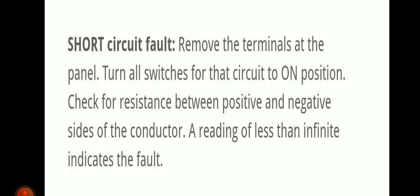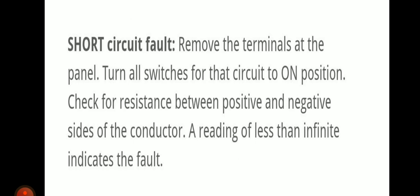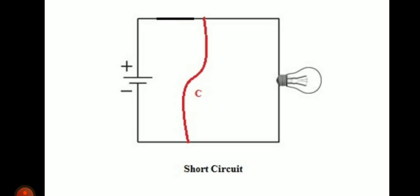To check for short circuit fault, we will remove the terminals at the panel and turn all switches on. Then we will check the resistance between the positive and negative terminal of the conductor using a megger. If the reading is less than infinity, this indicates the circuit has a fault — it is having a short circuit fault.